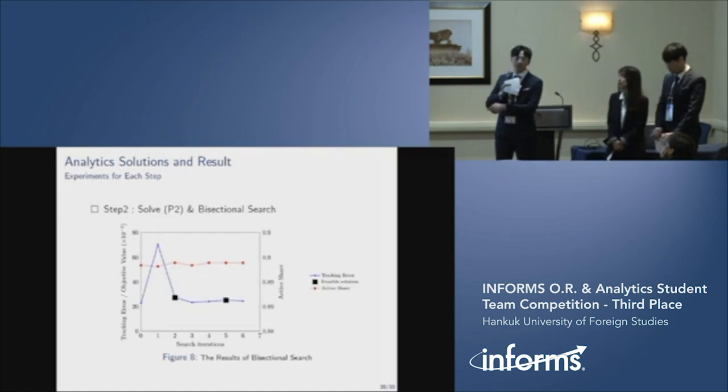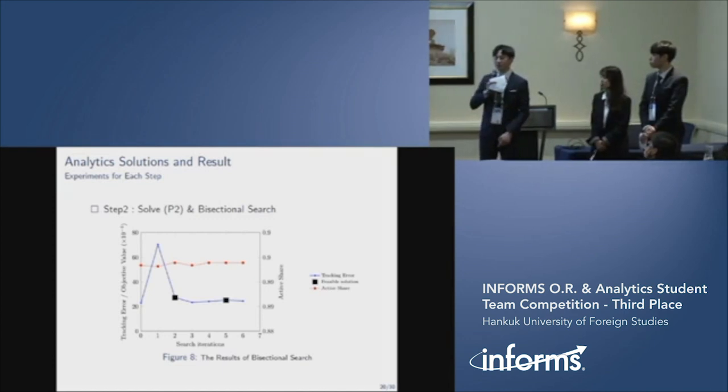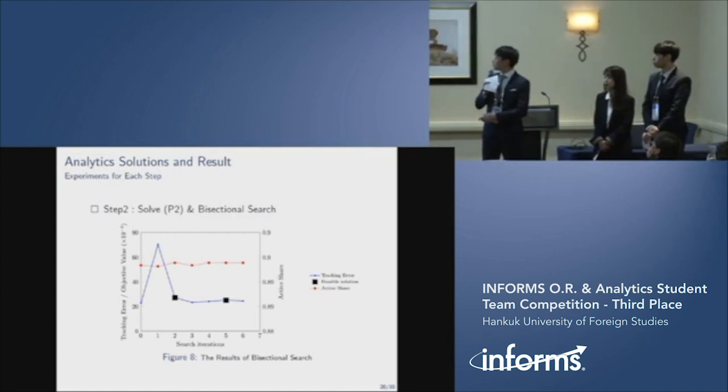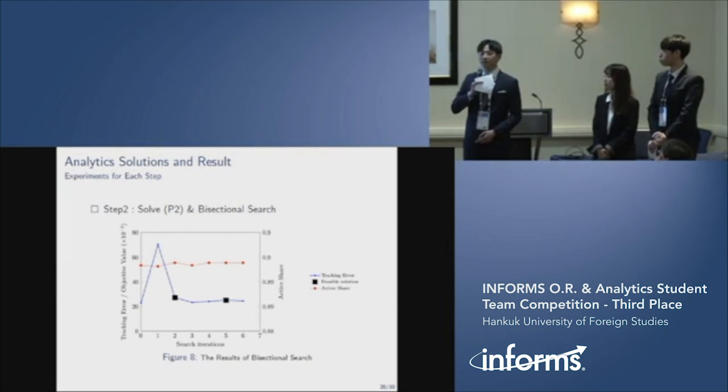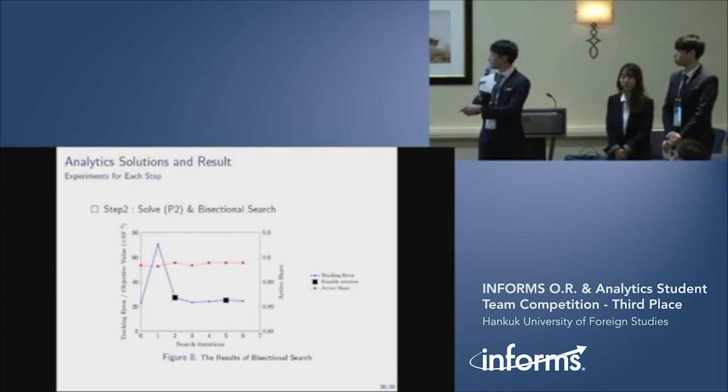This graph shows the changes of tracking error and active share values during each iteration. Active share value of this red line is consistent. And tracking error value of this blue line has severe fluctuation. But feasible solution could be found through bisectional search at this black scale.